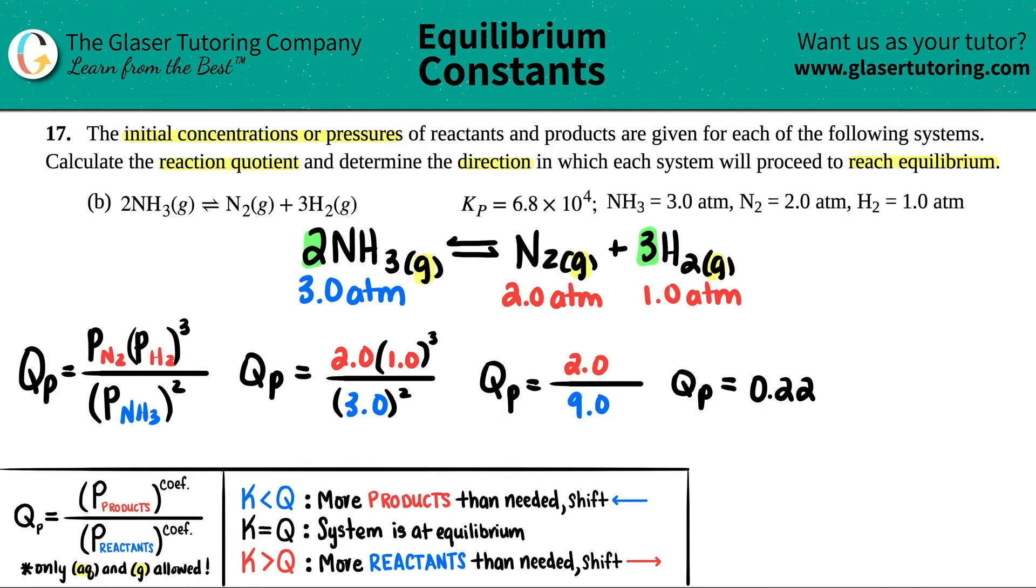We found the reaction quotient, first part done. Now in order to find the direction in which the system will proceed, we just have to compare what the Q value was to the K value. I always put the Q value on the right side of the comparison and the K value on the left. A lot of textbooks will swap these, but there's a cool trick if you put the Q on the right hand side. I have 0.22 for the Q value, and these are specifically Qps and Kps.